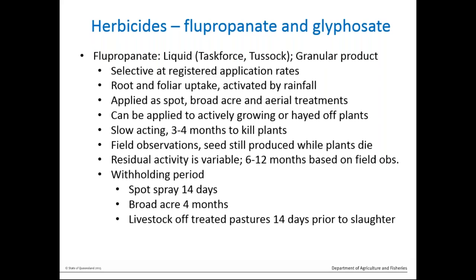Flupropanate is slow-acting — can take three to four months to kill plants. From field observations, seed is still produced while the plants die and a portion of that seed is viable. Residual activity can be variable, six to 12 months based on field observations. Withholding periods are really important: if spot spraying, 14 days; if broad acre, four months. Livestock on treated pastures need to be spelled for 14 days on clean feed prior to slaughter. The labels of Taskforce and Tussock are actually a little bit different, so ensure you read your label and get good advice before using flupropanate.